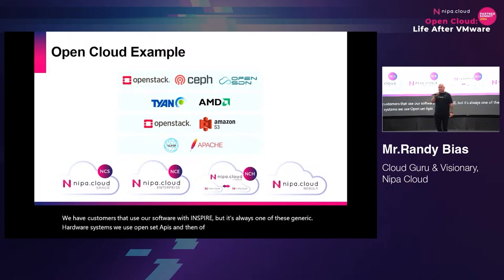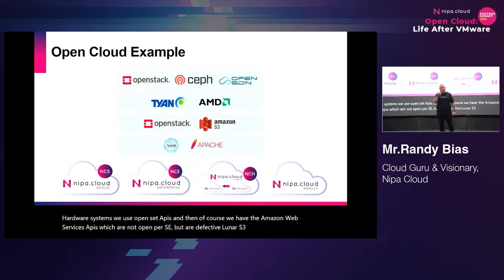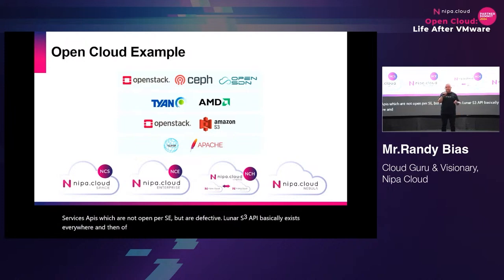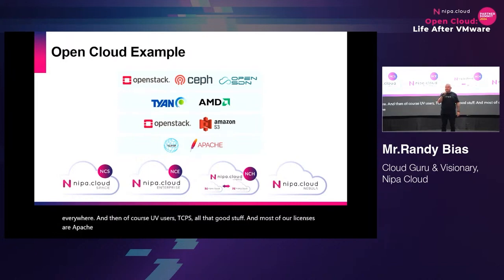We use OpenStack APIs. And of course we have the Amazon Web Services APIs, which are not open per se, but are a de facto winner — the S3 API basically exists everywhere. We use open standards like TCP/IP, MPLS, all that good stuff. Most of our licenses are Apache or GNU. And pretty much that's the whole stack.